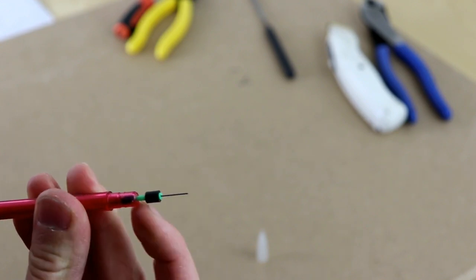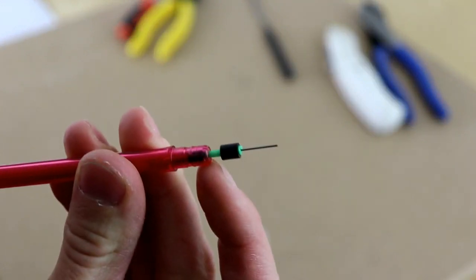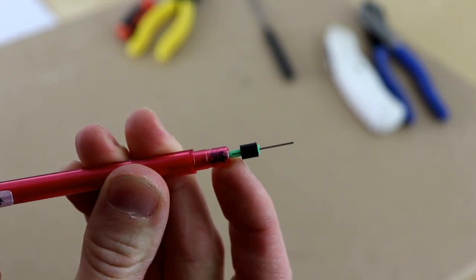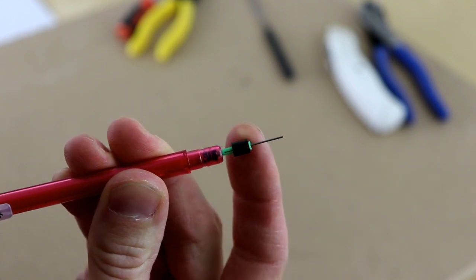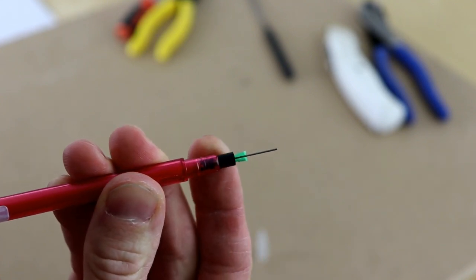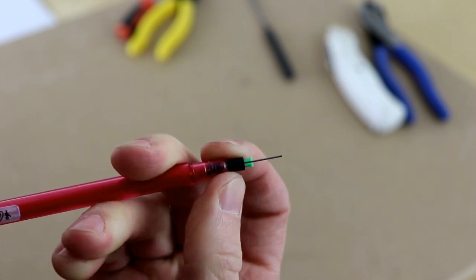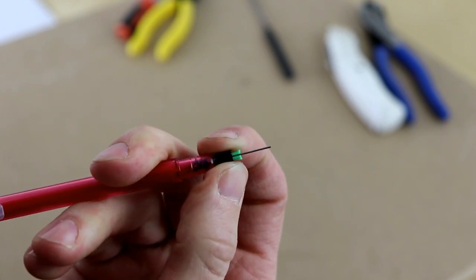Inside here we have a couple things going on. We have a green stem that the lead passes through. You can see a gap in there. This green stem is actually a clamshell that is opened and closed by this black collar.